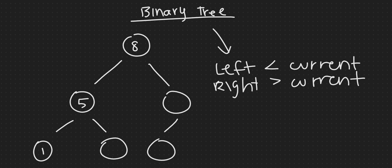An example of this arrangement could be one, seven. On the right hand side it needs to be greater, so we could have nine, and this needs to be less than nine but greater than eight. Since that's not possible, let's say we put ten here — now we can put nine here and this is a good binary tree.